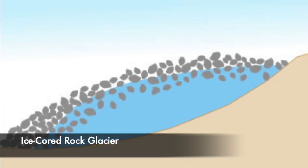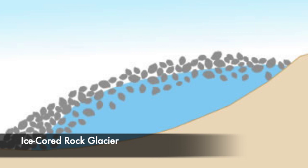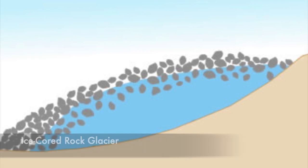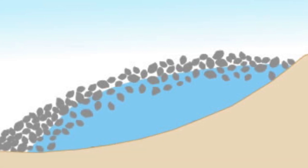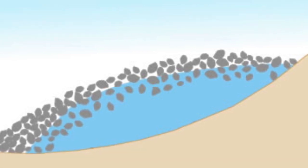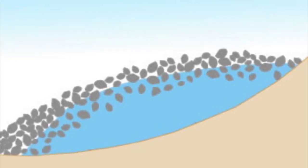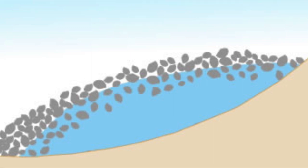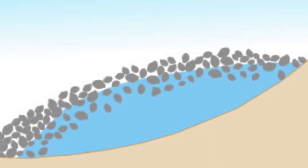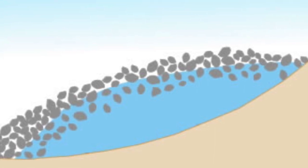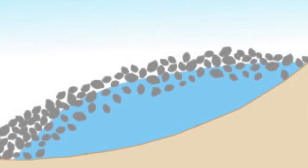Here is a cartoon illustration of an ice-core rock glacier. This type forms when rock is deposited onto the surface of an established glacier, producing a blanket of rock on the surface, while a solid core of ice still exists at depth.